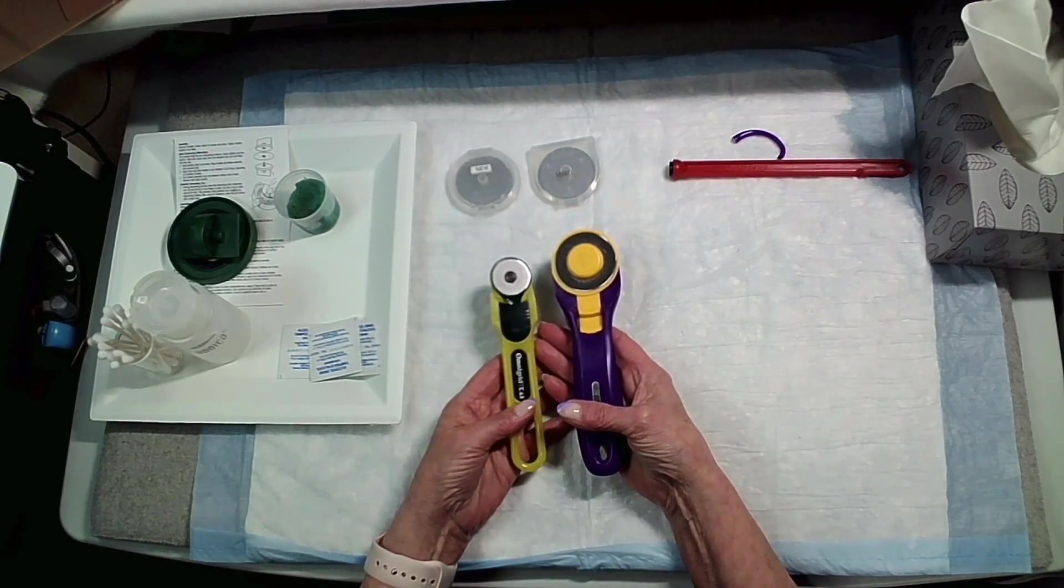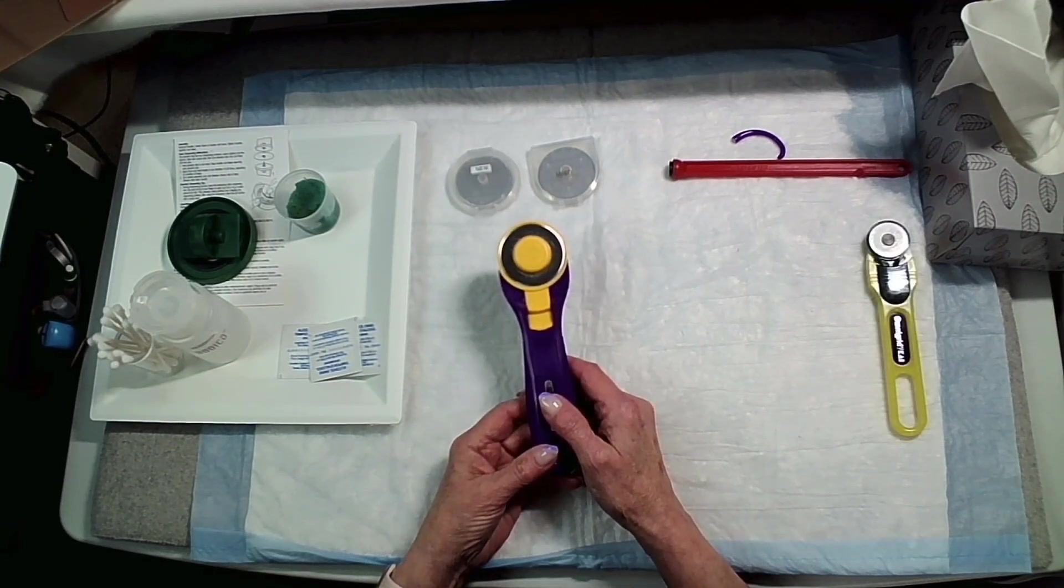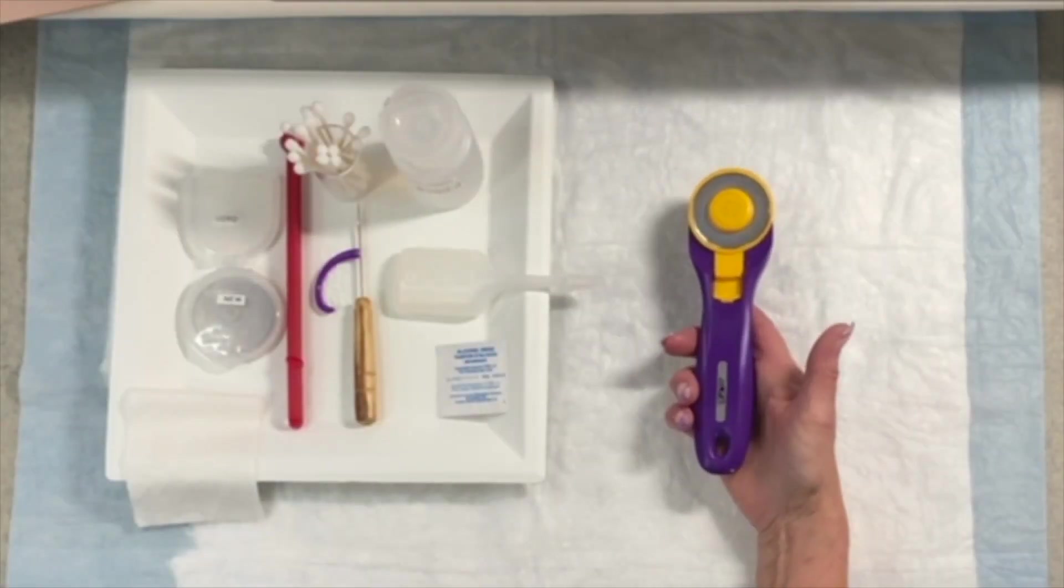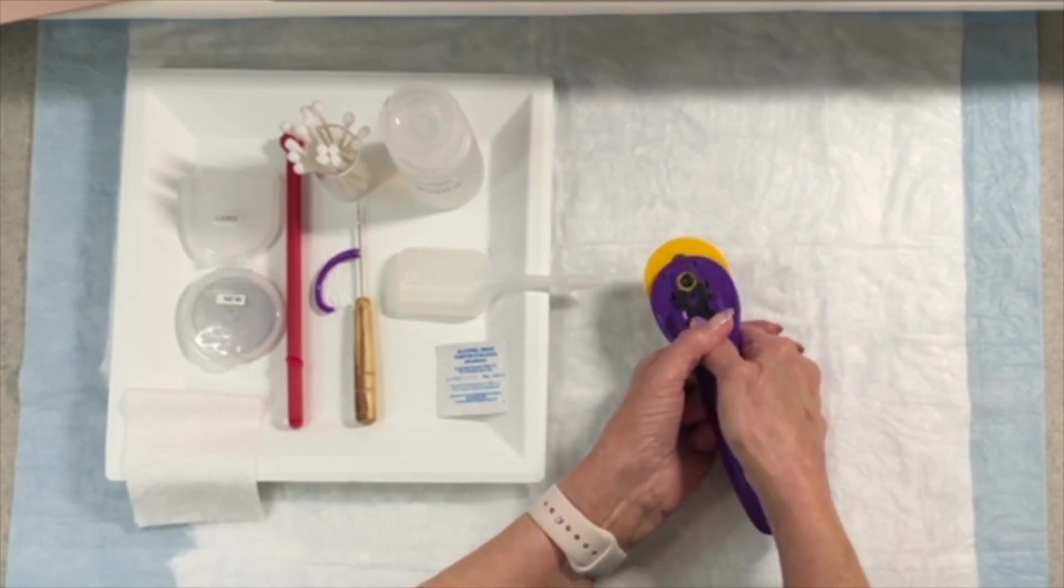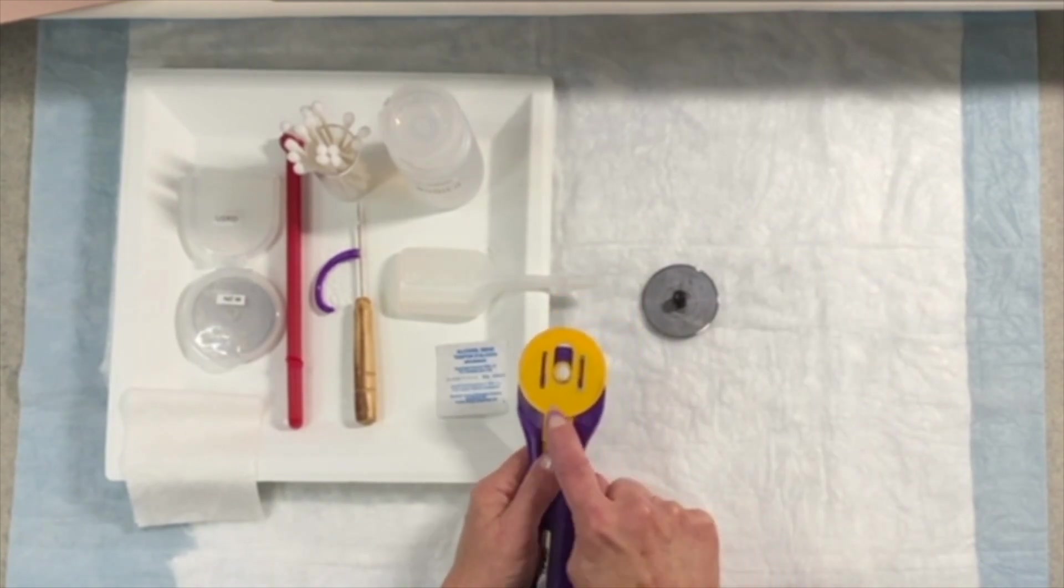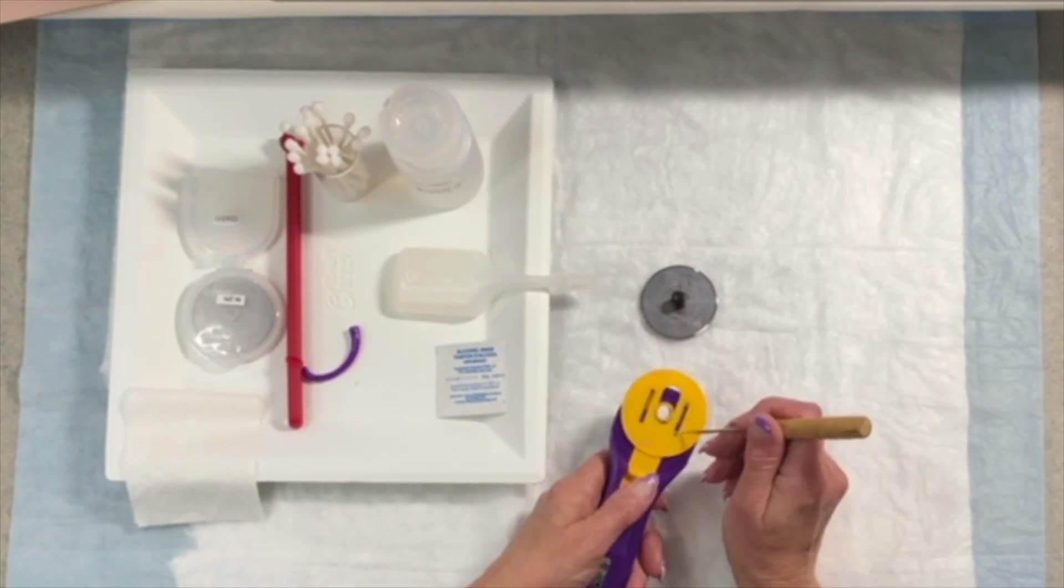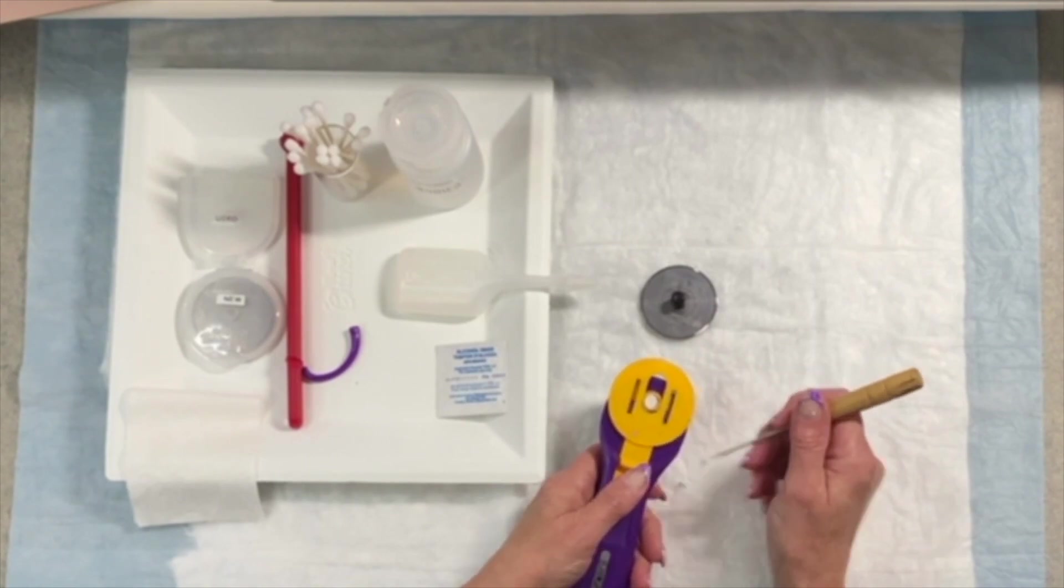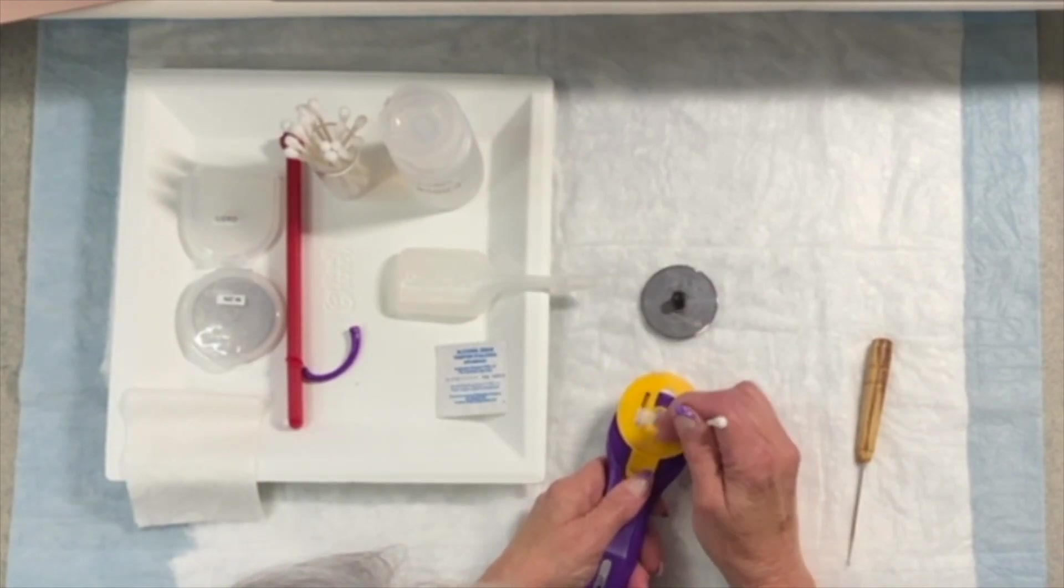Your blades are going to wear out and you will have to replace them. So this part of the video I'm going to show you a couple of things that I've learned and that I do with my rotary cutters. Before I change my blade I always clean it. To clean my Olfa I just turn it over and I release and the blade will drop out. I'm going to clean all the debris out of my blade.